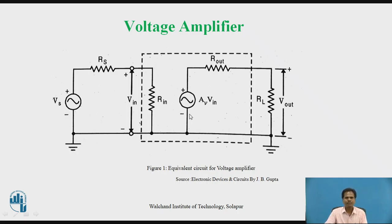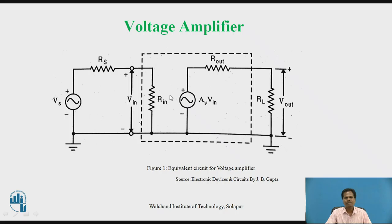For the voltage amplifier, the input signal is a voltage signal and the output signal is an amplified voltage signal. The ideal voltage amplifier provides an amplified output voltage that is proportional to the input voltage signal, and the proportionality constant, called the transfer ratio or gain, is called the voltage gain, designated as AV. It is independent of input source impedance and output load impedance. For an ideal voltage amplifier, the input impedance should be infinite and the output impedance should be zero.